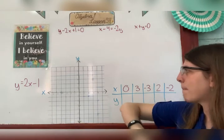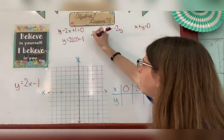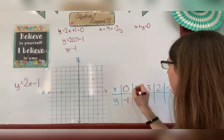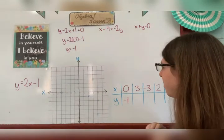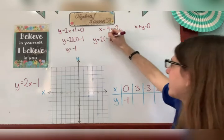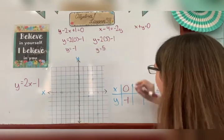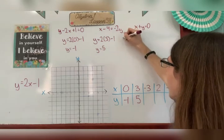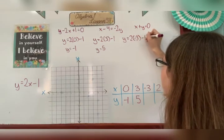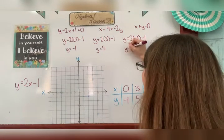To solve for y, I plug each x value into the equation y equals 2x minus 1. Starting with zero: y equals 2 times 0 minus 1, which is 0 minus 1, so y equals negative 1. Next, x equals 3: y equals 2 times 3 minus 1, which is 6 minus 1, so y equals 5. Then x equals negative 3: y equals 2 times negative 3 minus 1, which is negative 6 minus 1, so y equals negative 7.